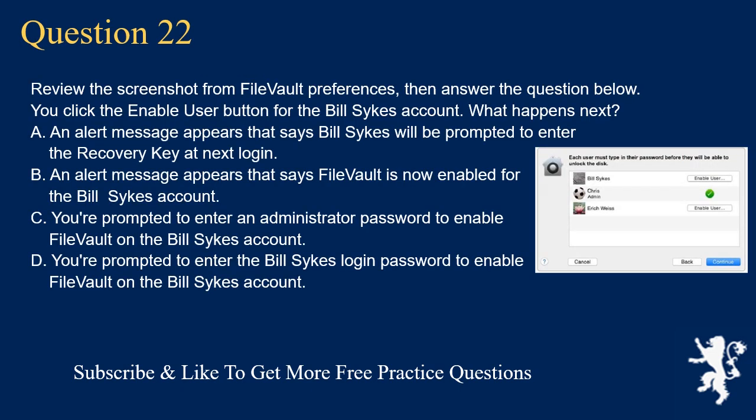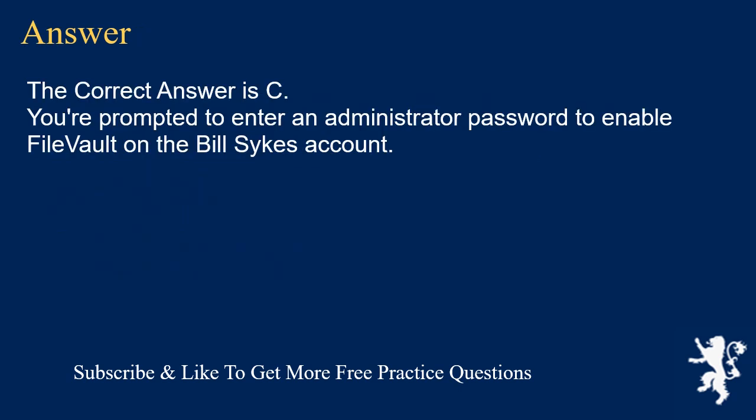Question 22. Review the screenshot from FileVault preferences, then answer the question below. You click the Enable User button for the Bill Sykes account. What happens next? A. An alert message appears that says Bill Sykes will be prompted to enter the Recovery Key at next login. B. An alert message appears that says FileVault is now enabled for the Bill Sykes account. C. You're prompted to enter an administrator password to enable FileVault on the Bill Sykes account. D. You're prompted to enter the Bill Sykes login password to enable FileVault on the Bill Sykes account. The correct answer is C: You're prompted to enter an administrator password to enable FileVault on the Bill Sykes account.